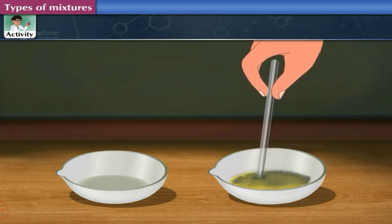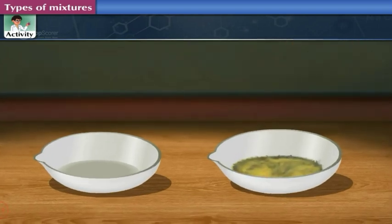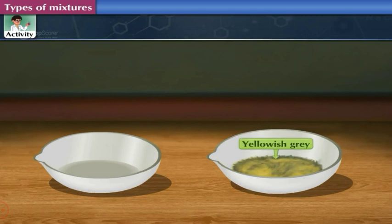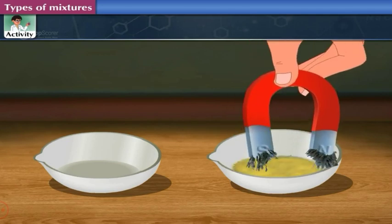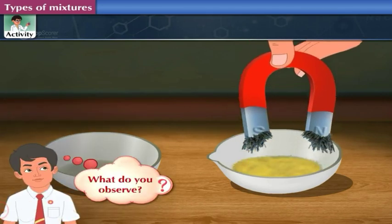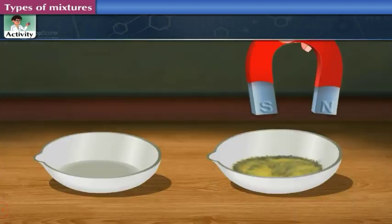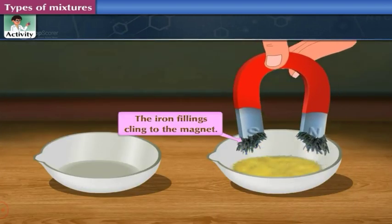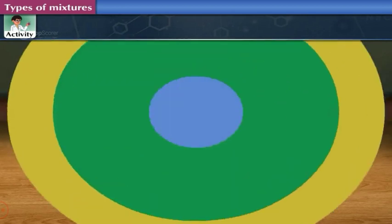Observe the color of the contents in the dish. It is yellowish-gray in color. Once again, bring the magnet near the contents of the dish. What do you observe? The iron filings cling to the magnet.